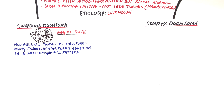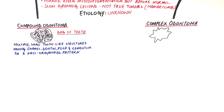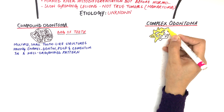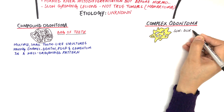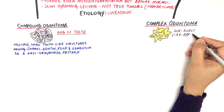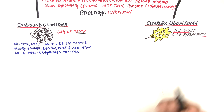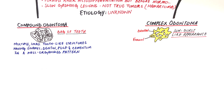On the other hand, the complex type, as the name suggests, has a complex structure. It consists of an irregular mass of enamel and dentine with the entire mass having a sunburst-like appearance. Unlike compound odontoma, it does not resemble a normal tooth in structure, in that enamel and dentine are arranged in a disorganized pattern.